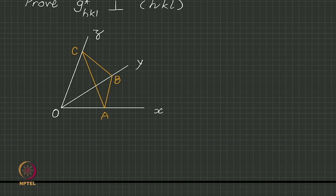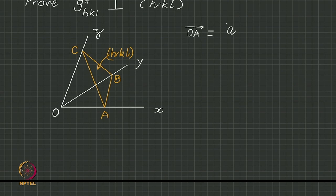We have already seen in the previous example that the vector o a, if this plane is h k l, then its intercepts are the vector intercepts are a by h, b by k and c by l.